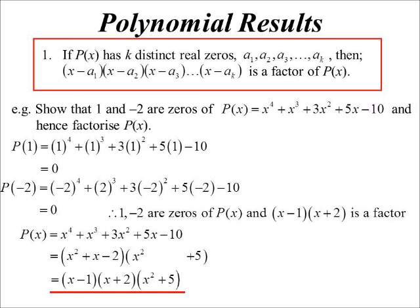Now I'll refactorize the first one and make it complete: x minus 1, x plus 2, x squared plus 5. And x squared plus 5, of course, does not factorize—well, over the real numbers anyway.